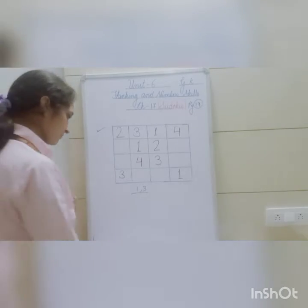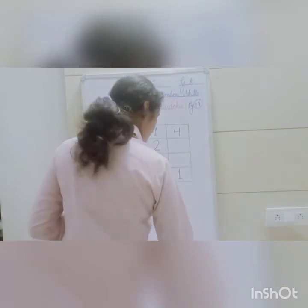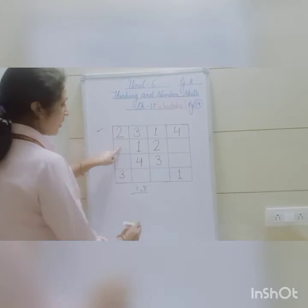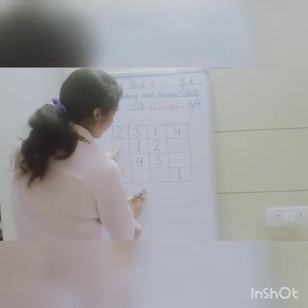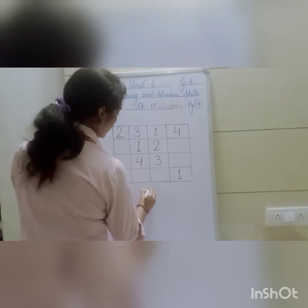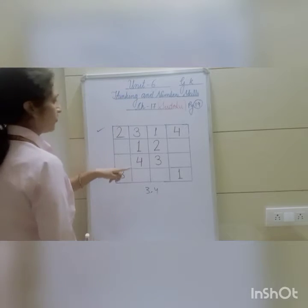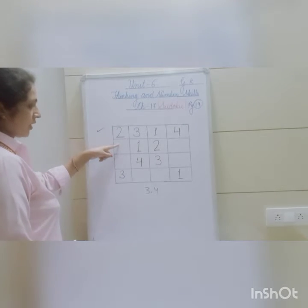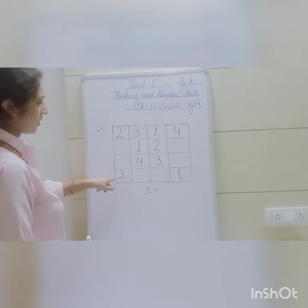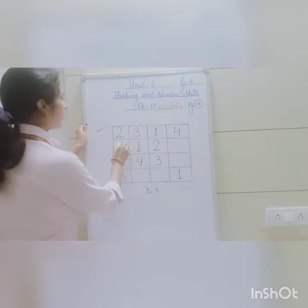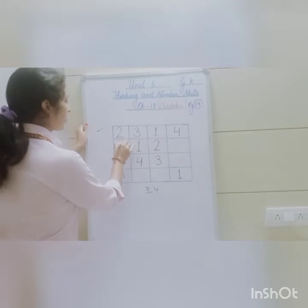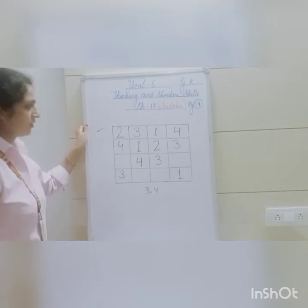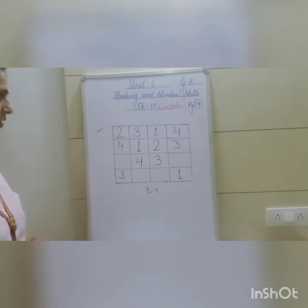Now come to the second row. 1 and 2 are already there. So 3 and 4 we have to fill. If we fill 3 here — no, we cannot, because 3 is already present below in that column. So we fill 4 here, and 3 goes in the remaining blank. The second row is also complete.